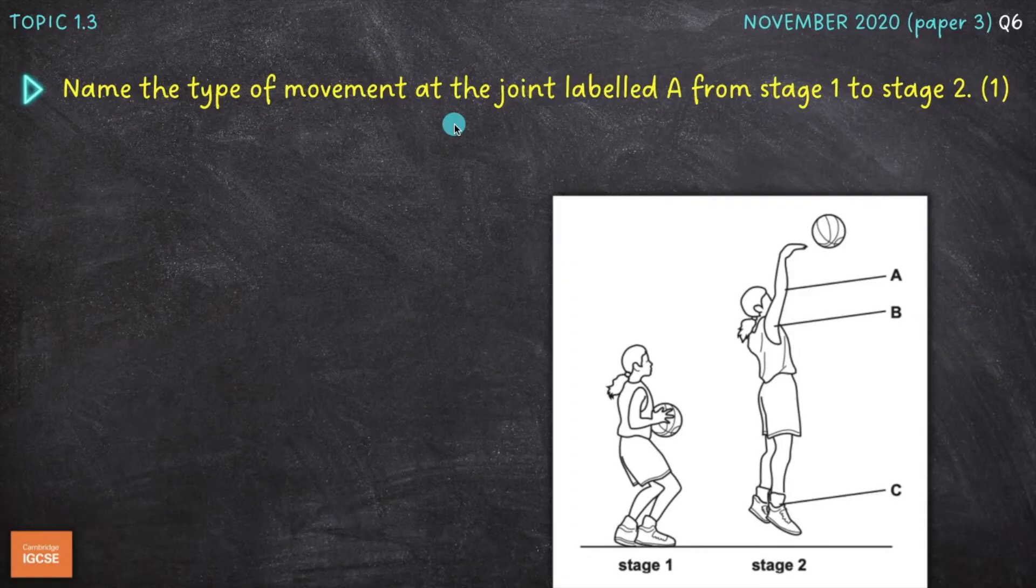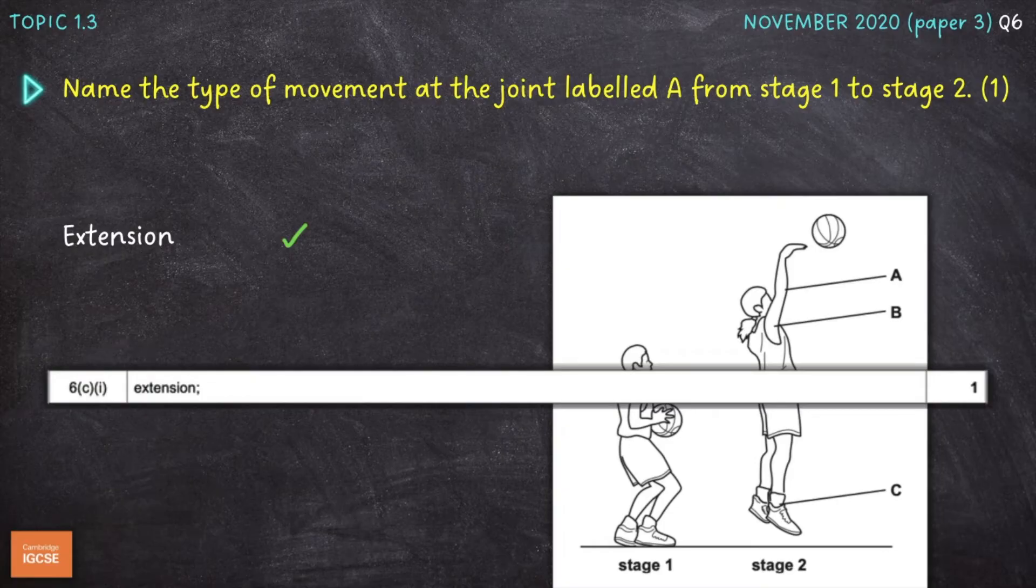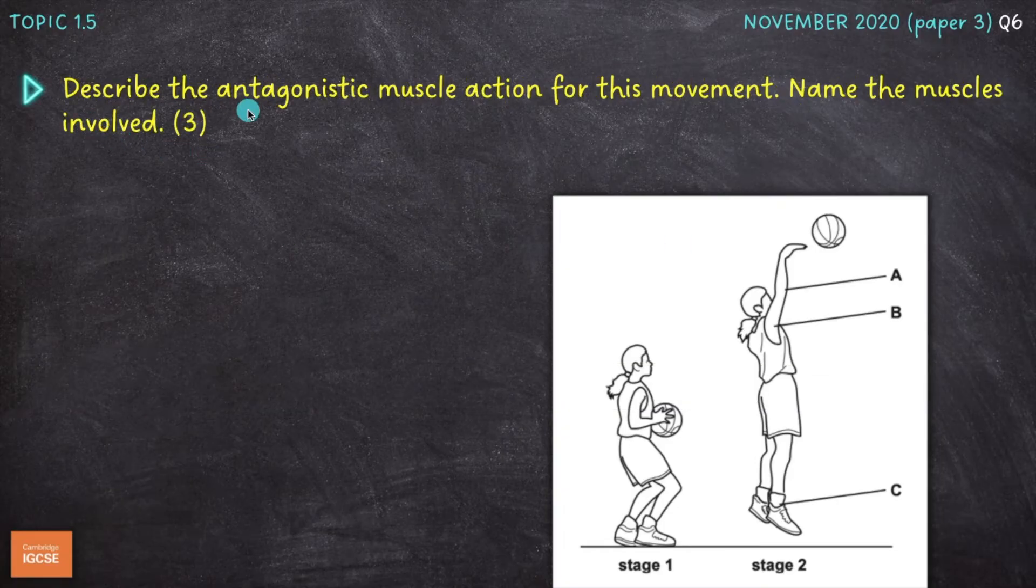Next question is to name the type of movement at the joint labelled A from stage 1 to stage 2. So now we're looking at the elbow joint. And as you can see we're straightening or extending that elbow joint, straightening the arm. So that is extension for another really easy simple mark.